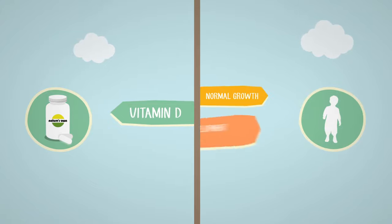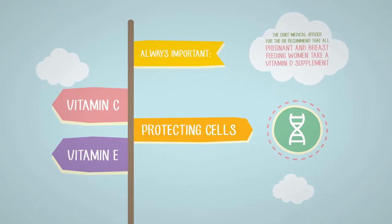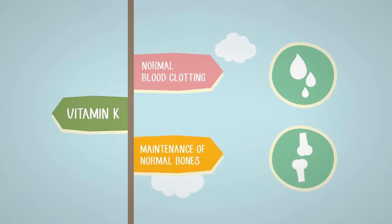Vitamin D is needed for normal growth and development of bone in children. Vitamin C and Vitamin E are important in protecting cells and keeping them healthy. Vitamin K contributes to normal blood clotting and the maintenance of normal bones.